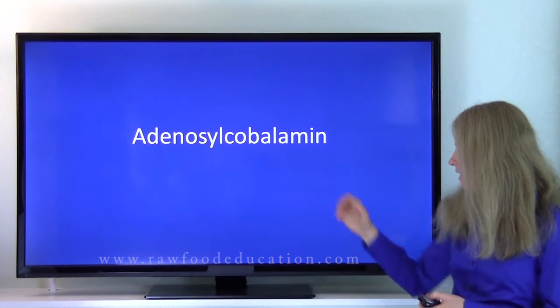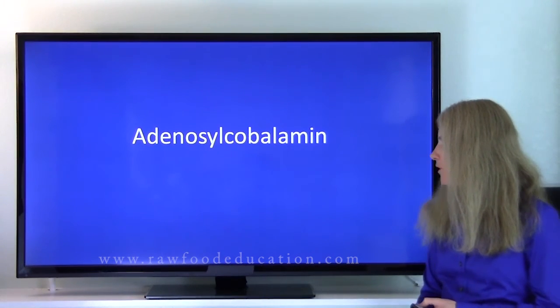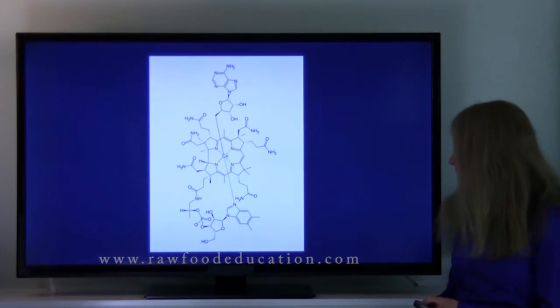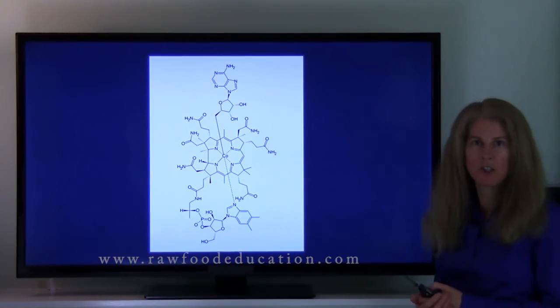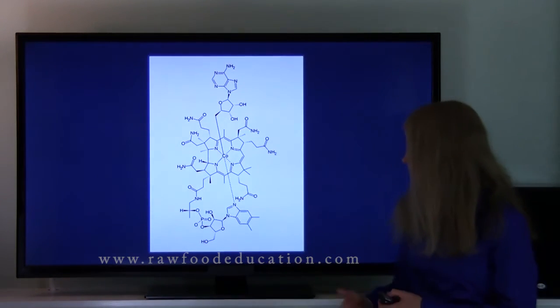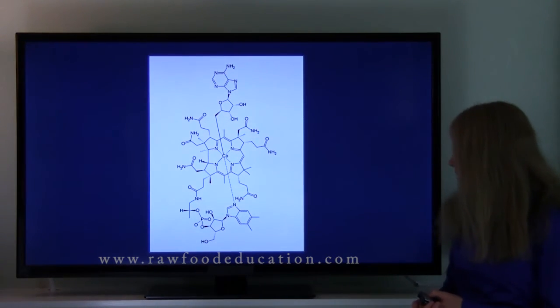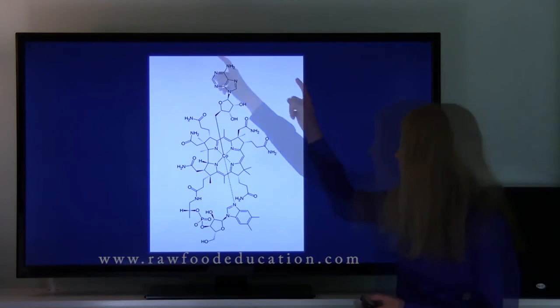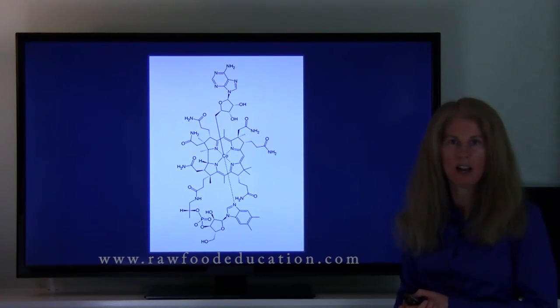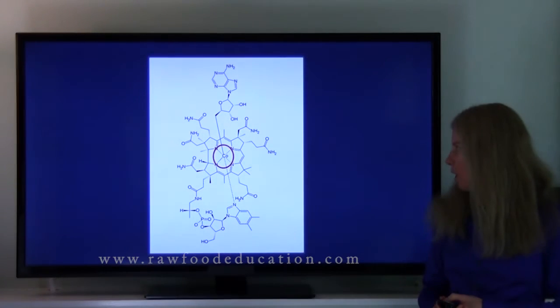Which brings us to our next form of vitamin B12, which is adenosylcobalamin. Here's a picture of adenosylcobalamin. It looks similar to the other forms of vitamin B12. There's a cobalt in the center of the molecule. But where it differs is what's attached to that cobalt. And with adenosylcobalamin, we have an adenosyl group attached to that cobalt. There's cobalt highlighted in the center of the molecule.